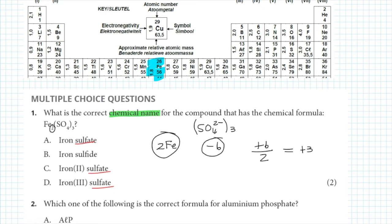The correct name for this compound is iron(III) sulfate, where the 3 indicates the charge on the iron ion. So D is the correct answer to question 1.